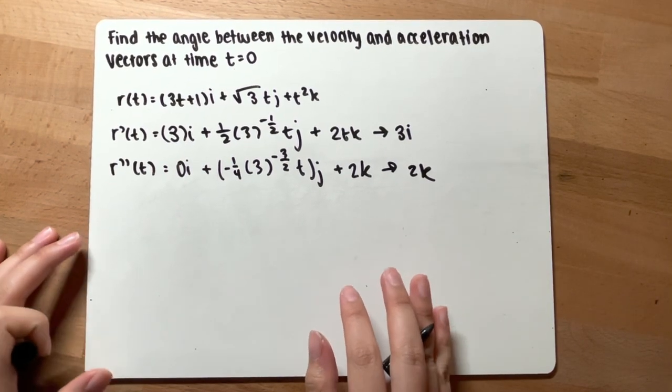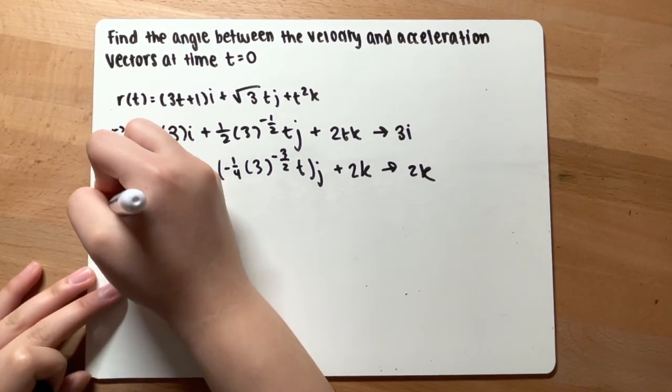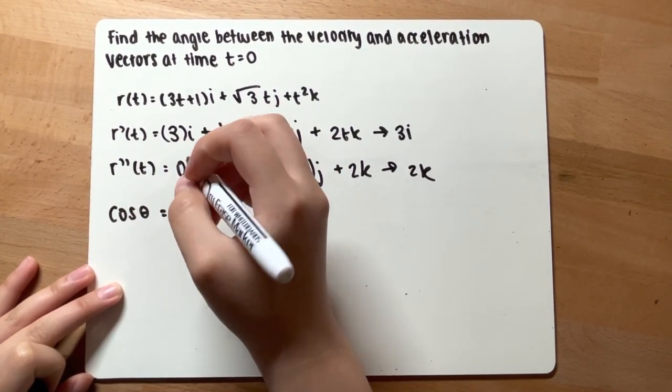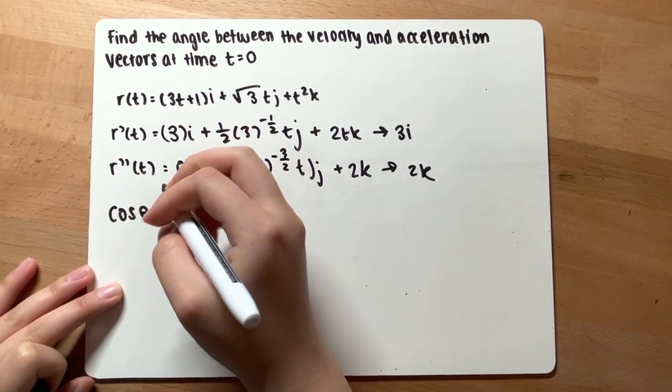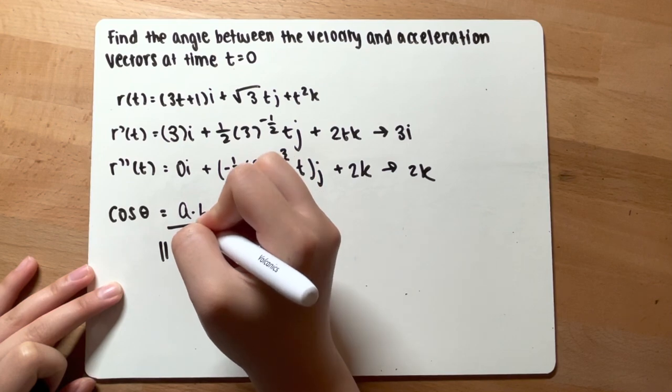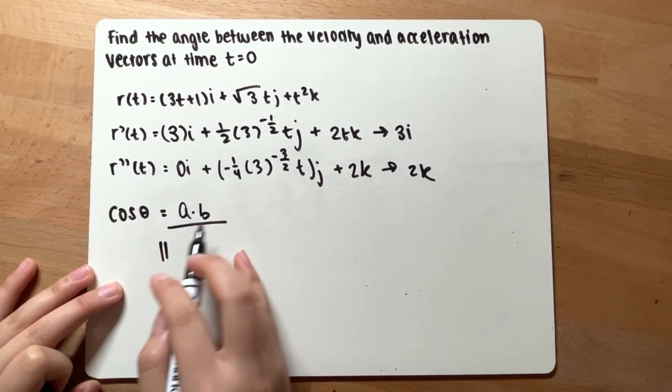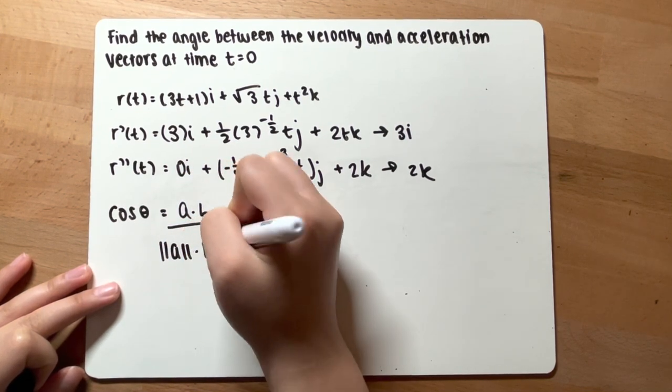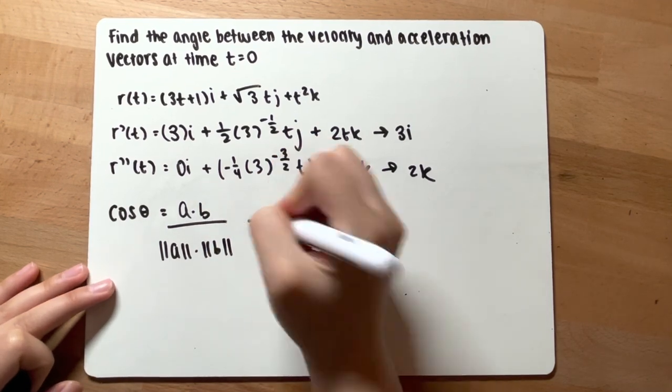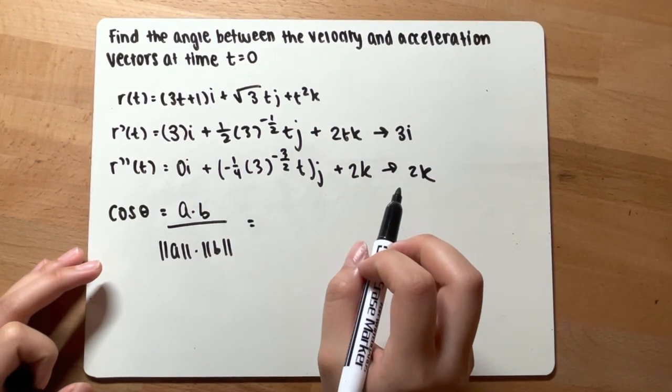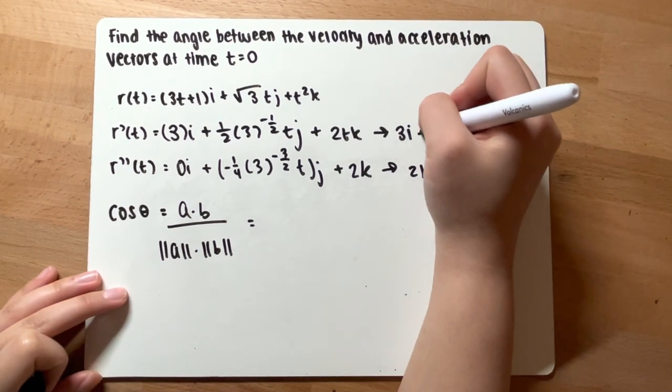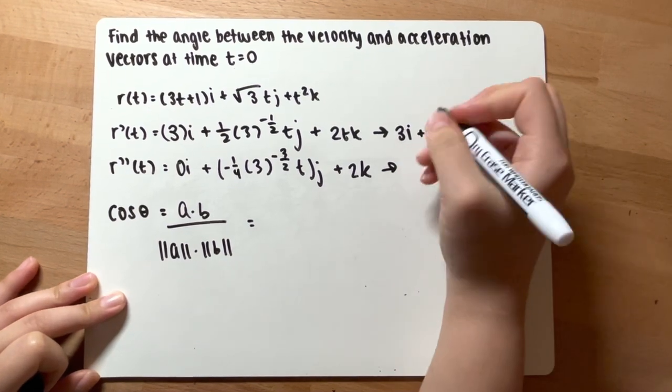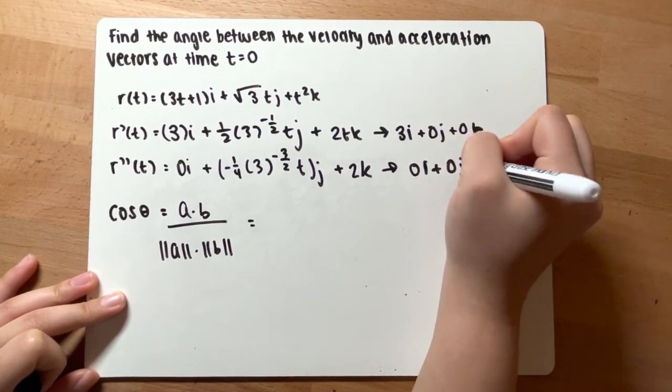Alright. Now to find the angle, you can recall from last chapter that the cosine theta equals the dot product of the velocities over the magnitude. So you are left with... Now this vector is basically 0j plus 0k. This vector is basically 0i plus 0j plus 2k.